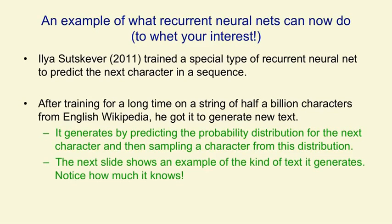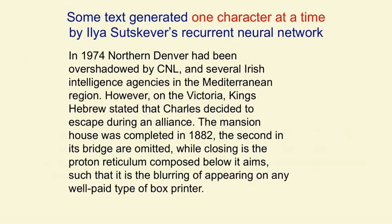The next slide shows an example of the text that it generates. It's interesting to notice how much is learned just by reading Wikipedia and trying to predict the next character. Remember, this text was generated one character at a time. Notice that it makes reasonably sensible sentences composed almost entirely of real English words. Occasionally it makes a non-word, but they're typically sensible. Within a sentence it has some thematic sense — the phrase 'several Irish intelligence agencies in the Mediterranean region' has problems, but it's almost good English. Notice also what it says at the end: 'such that it is the blurring of appearing on any well-paid type of box printer' — there's a thematic thread about appearance and printing, and the syntax is pretty good. And remember, that's one character at a time.